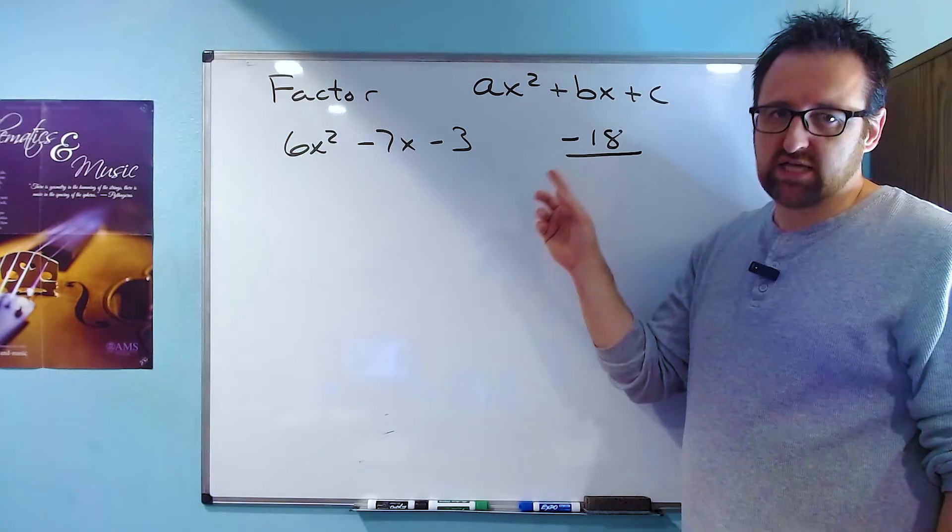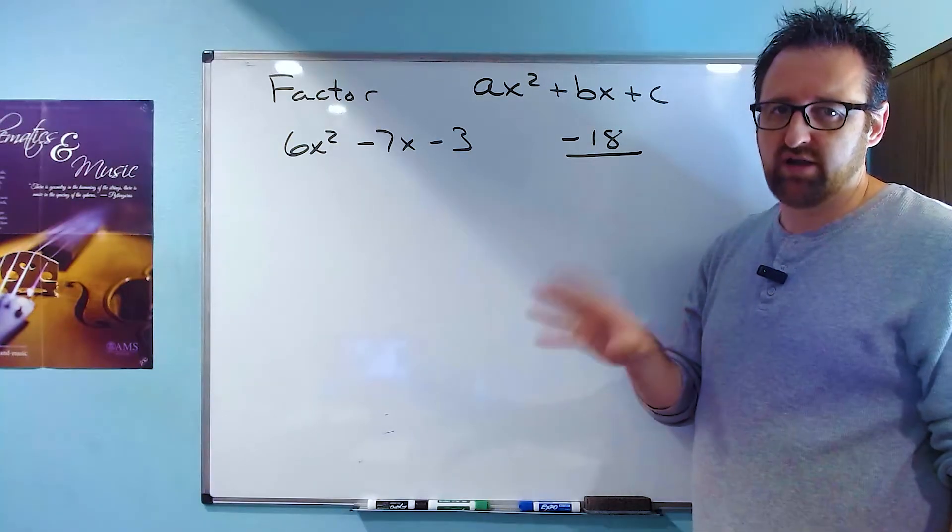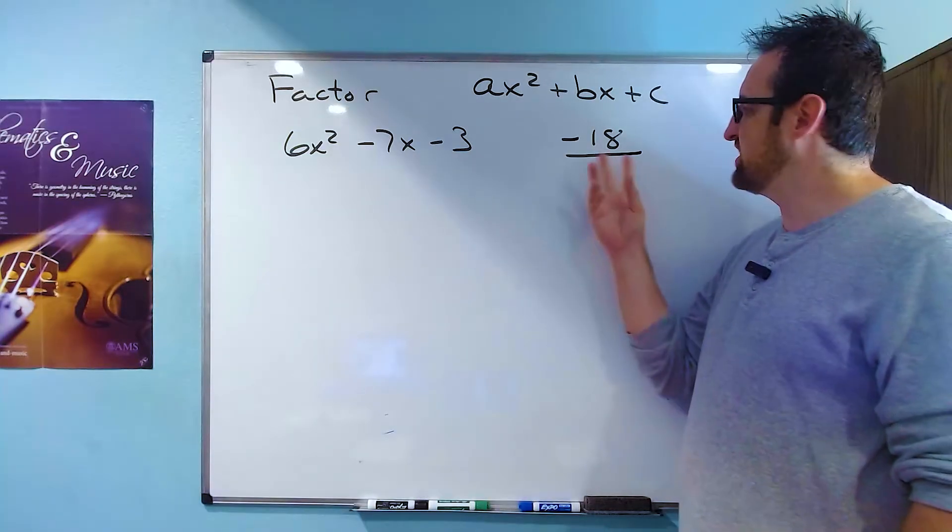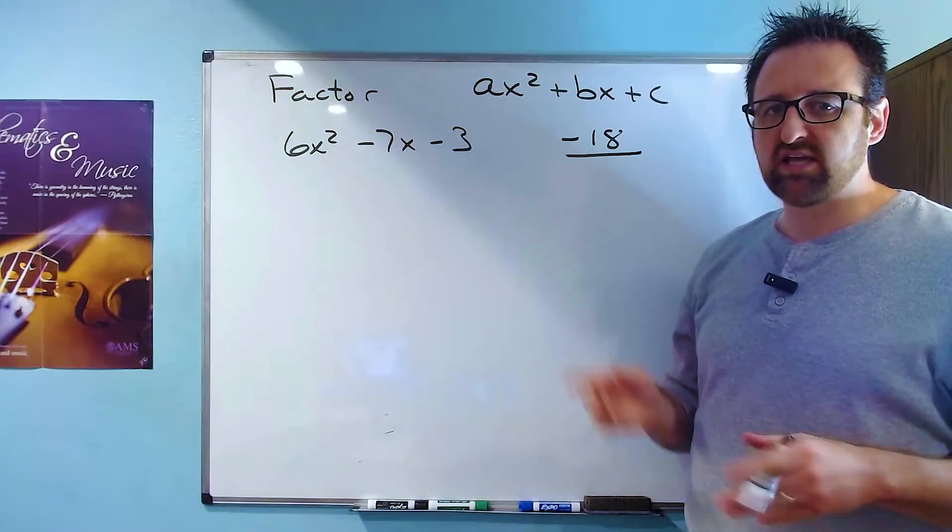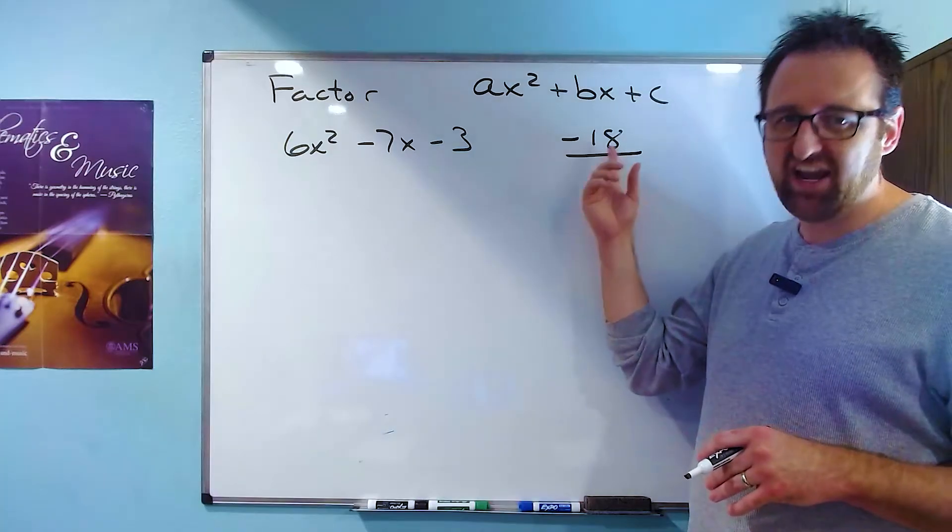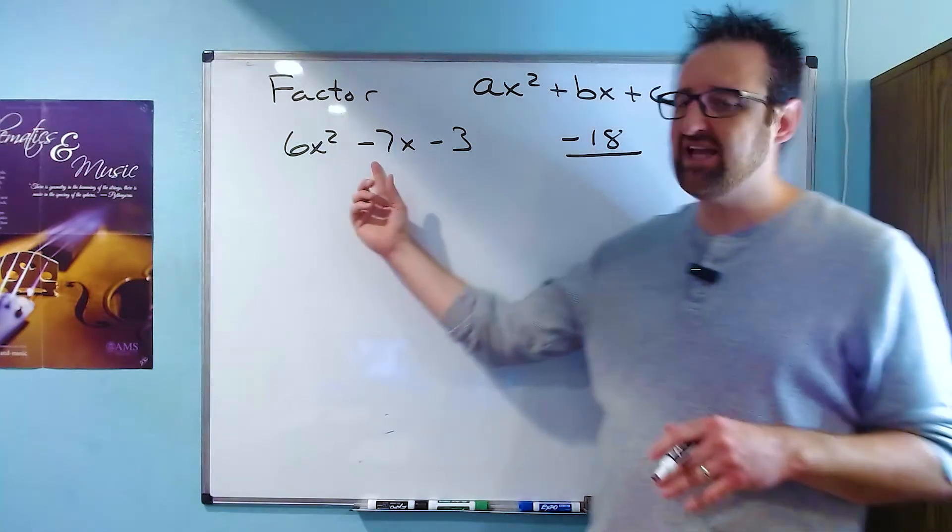Now, I want to keep track of the sign, but I'm not going to worry about it for now. Whether it's positive or negative, just think of the number 18 for now. The trick here, and what makes any AC method work, is that what you're going to look for is factors of this number here that add to the middle number.